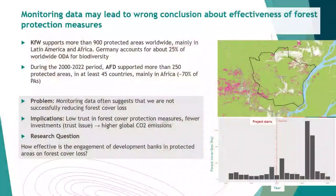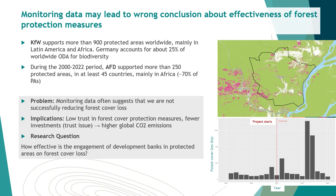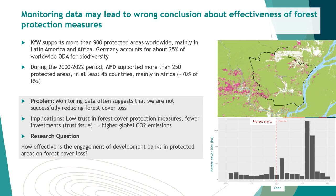Thank you Melvin. So why are we analyzing protected areas? Biodiversity conservation represents a priority for both French and German development cooperation. Germany alone accounts for about 25% of worldwide ODA and supports through KFW around 900 protected areas worldwide, mainly in Latin America and Africa. At AFD, although we don't have a precise total, we have supported more than 250 protected areas over the last 20 years, in at least 45 countries, mainly in Africa. Given this huge engagement on biodiversity conservation, it is crucial to measure whether projects are effective.